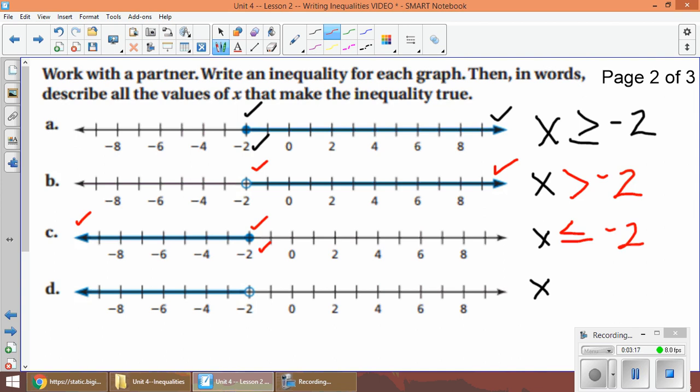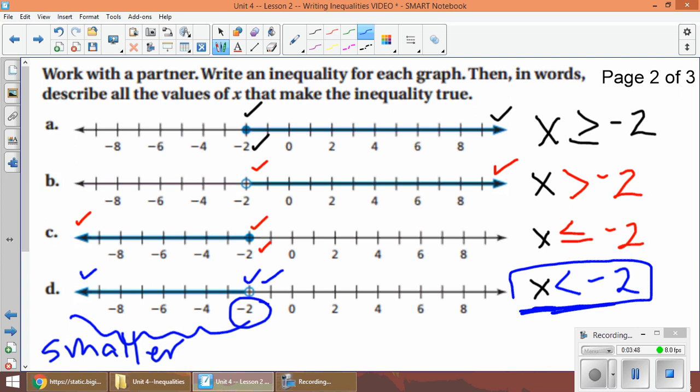And for the last one I see an open circle, so that means greater or less. The arrow goes to the left, so as I go left my number is getting smaller, so that means less than. I'm not going to write equal to because the circle is open, and the number is negative two, so my condition must be smaller than negative two.